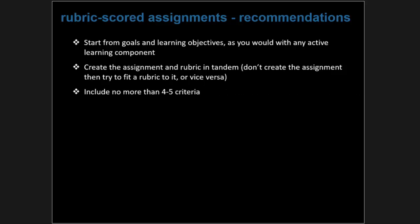Generally, I recommend including no more than four or five criteria in a rubric-scored assignment. More than this and the assignment may get very complex, making it hard for students to understand what to generate and difficult for you to evaluate them. If an assignment tops five criteria, consider breaking it into two smaller assignments. Similarly, include no more than four to five performance levels per criterion — with more than five, distinctions become too subtle to determine where a student falls.